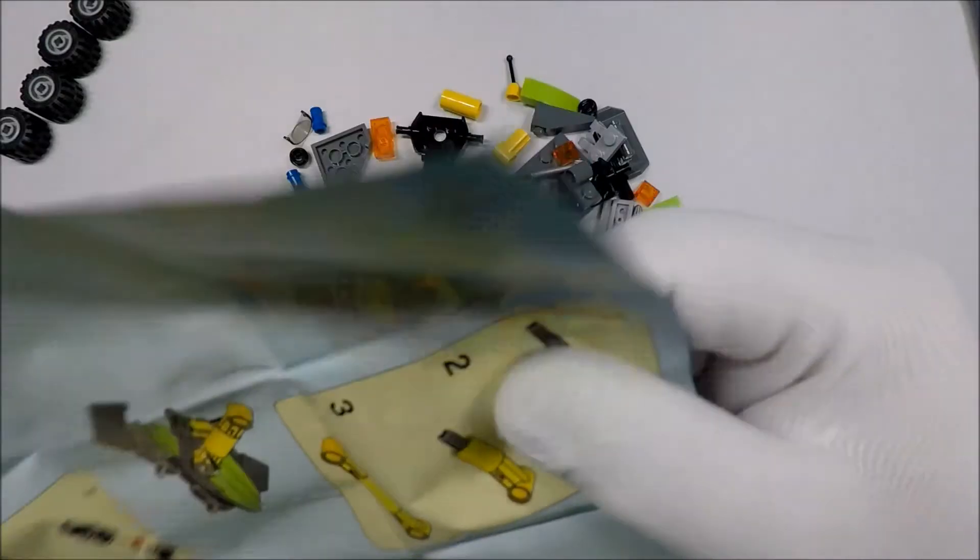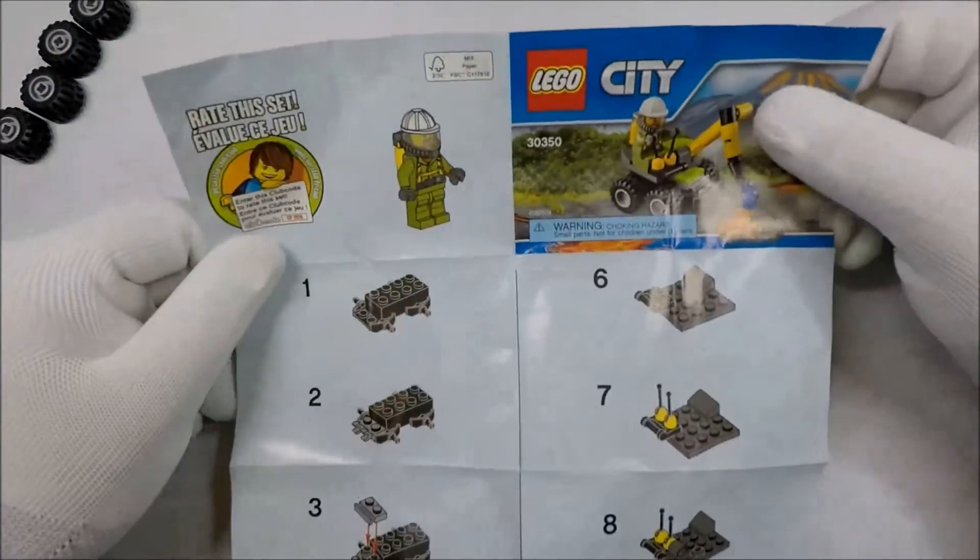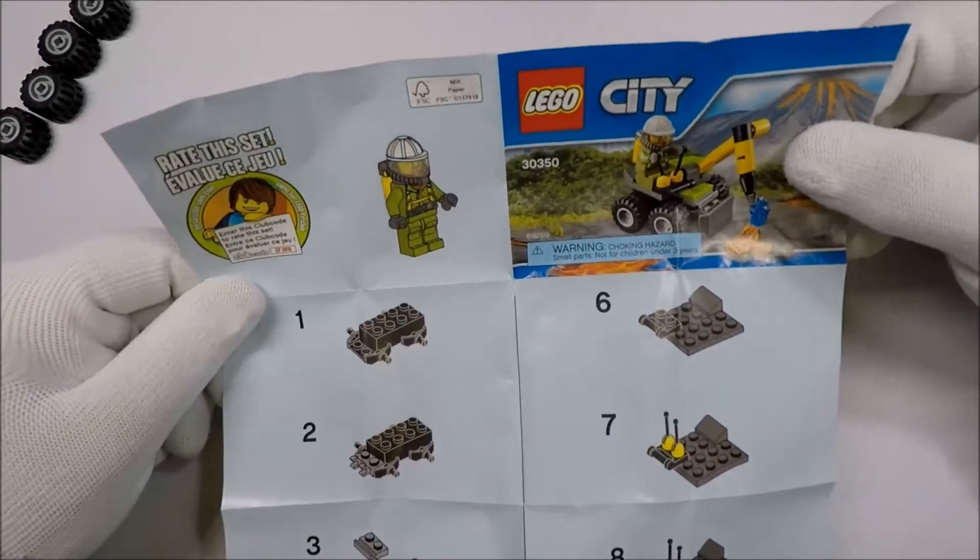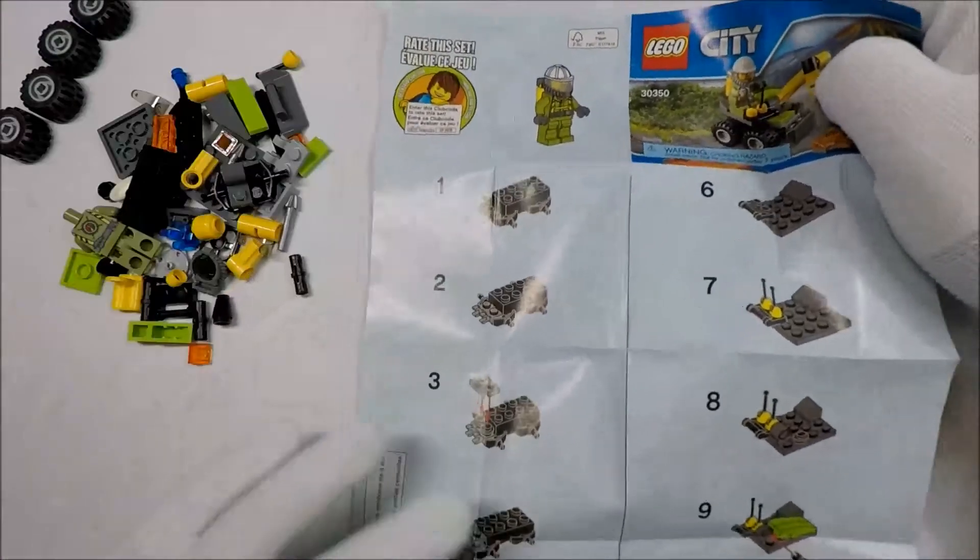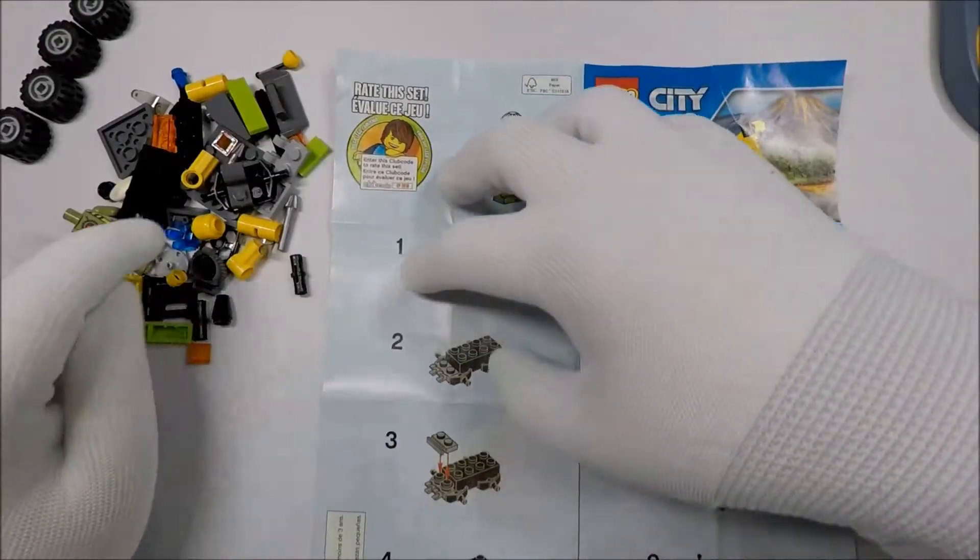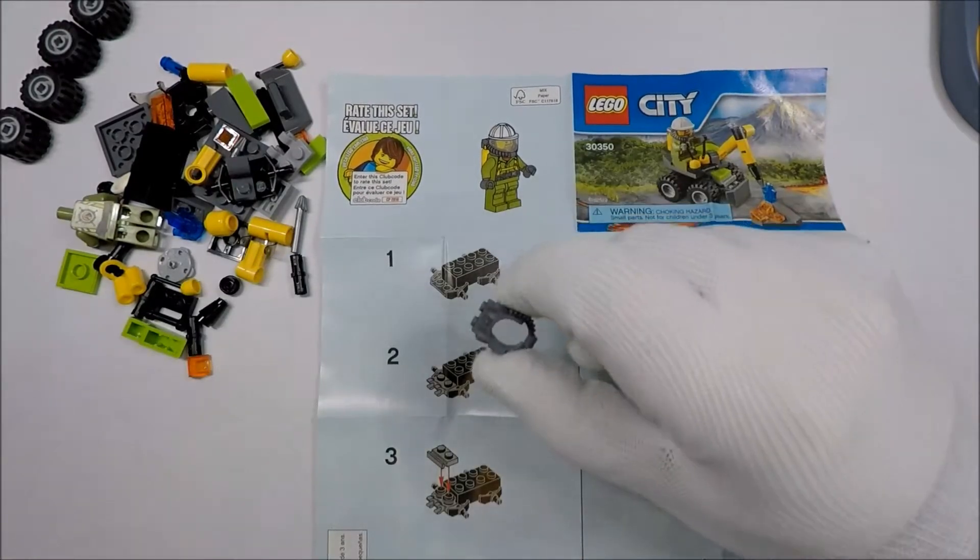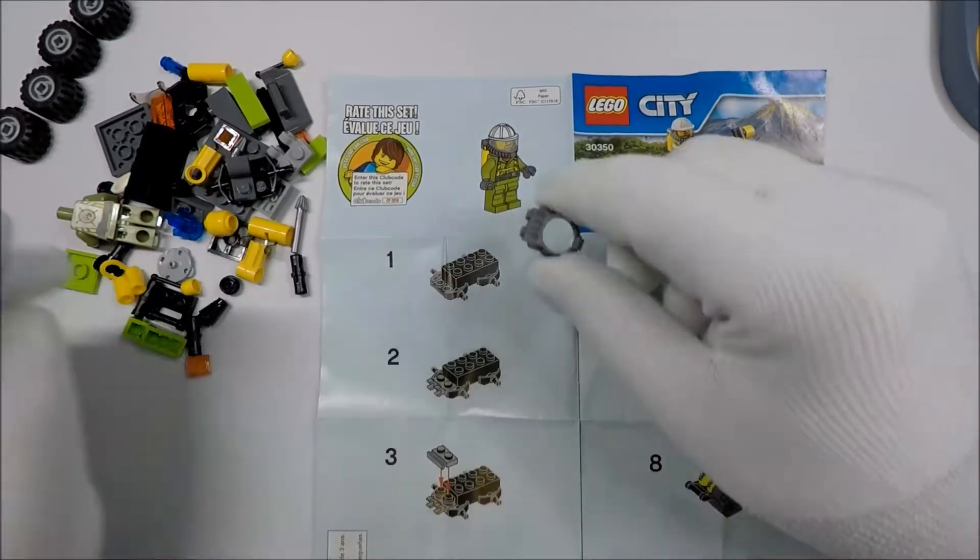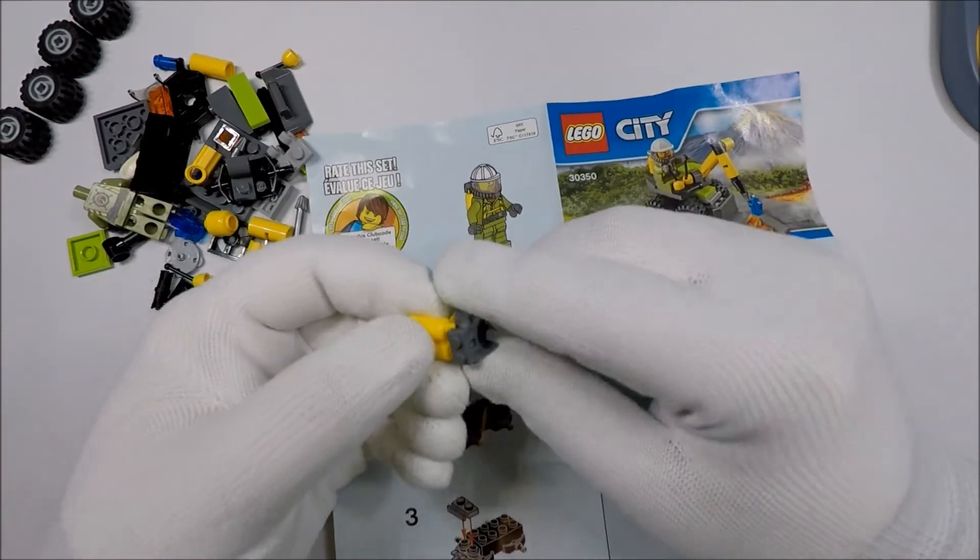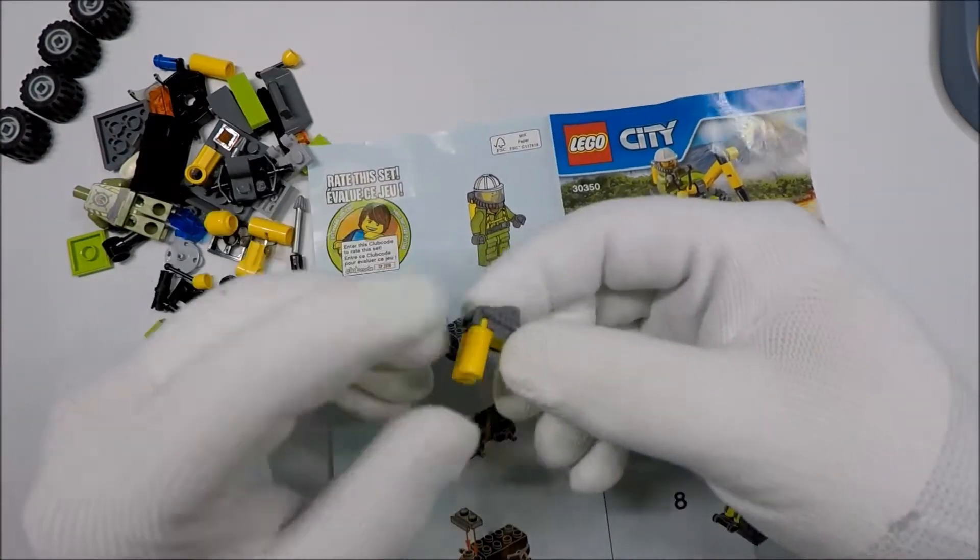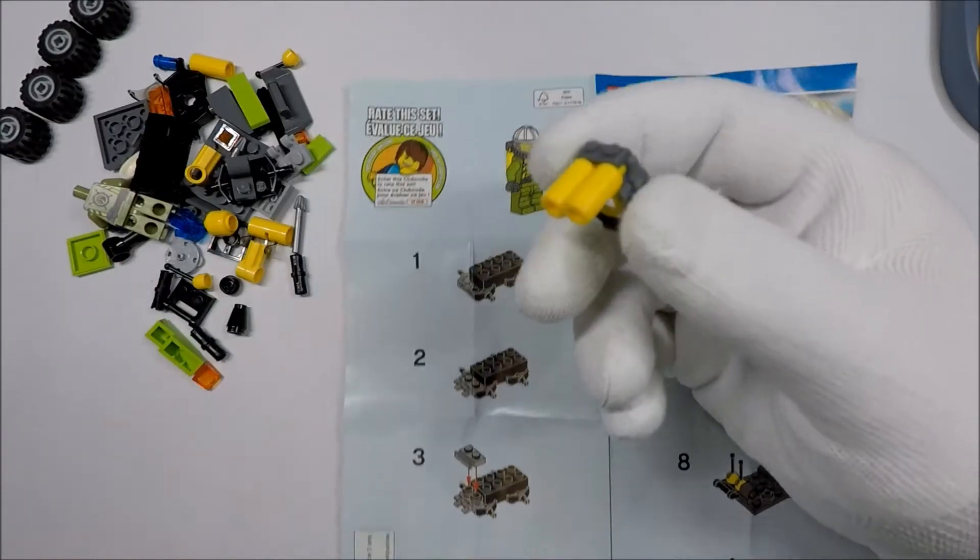We don't even get any instructions on how to put the dude together. So we just have a picture of him. We know that this goes toward the back and this goes toward the front. It's looking like this sits right there. That looks right.